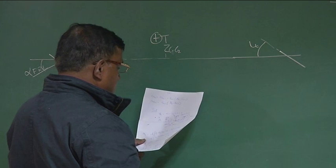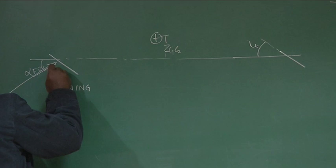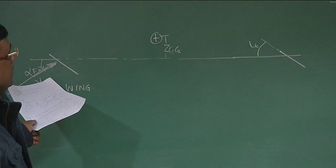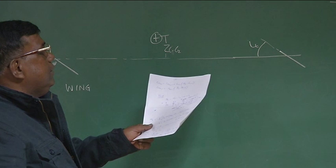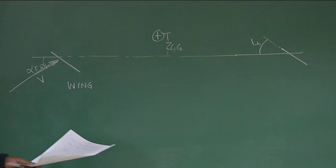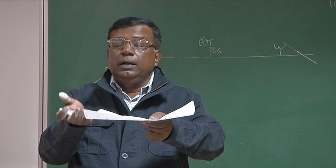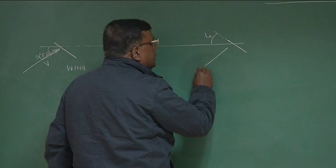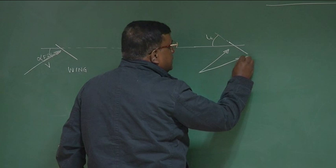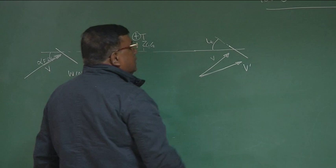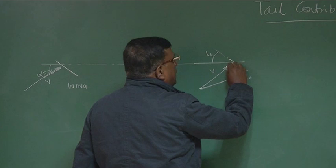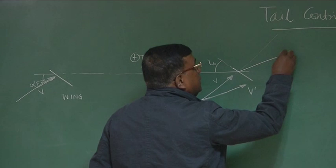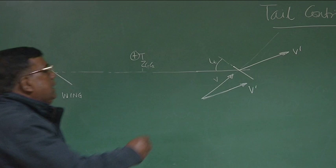Please understand one thing: if this is the V direction — the free stream velocity direction — when the tail sees this dynamic pressure, the velocity vector is no more the same as the free stream velocity vector. As there is lift on the wing, there is higher pressure and lower pressure, and there are vortices. The vortices travel and induce a downwash at the tail. So the velocity vector, which was the free stream direction, because of downwash gets tilted, and I call it V prime. The angle between these two is epsilon, which is the downwash angle.